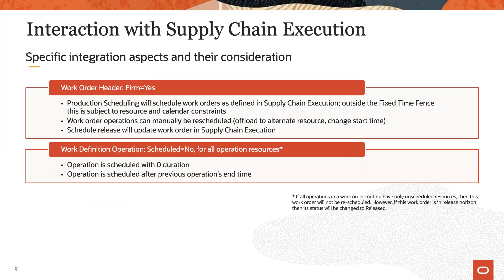Now let's review a few specific integration aspects. First, if a work order in manufacturing has its firm flags set to yes, then production scheduling will aim to schedule such work orders precisely as defined in manufacturing. However, outside the fixed time fences, resource and calendar constraints may require changes to such work orders. Also, the scheduler may manually modify the work orders, which will be accepted.